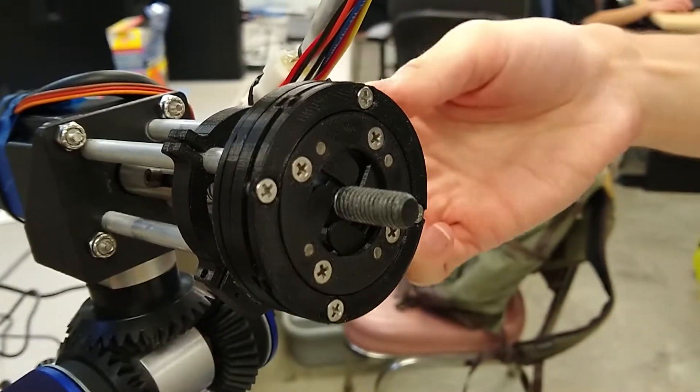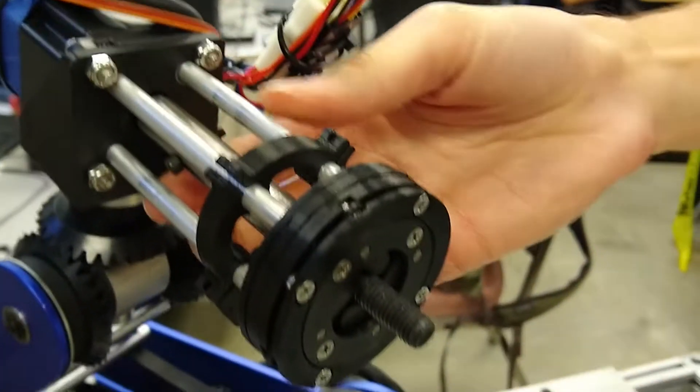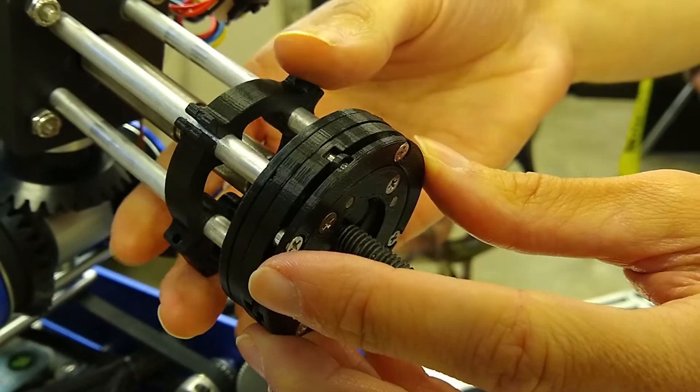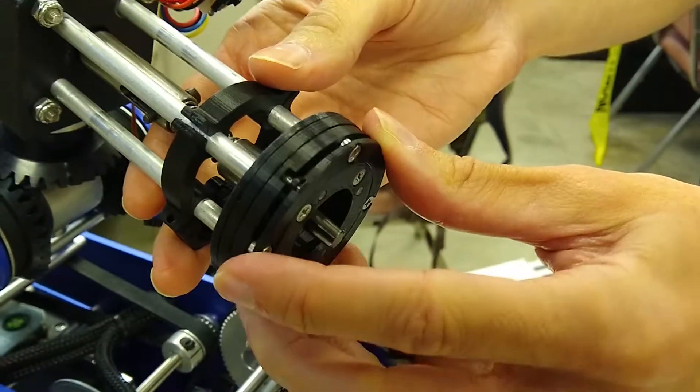...the little iris will close or open depending on whether we're trying to untighten or tighten a bolt into the bolt hole. That allows the robot to actually securely pick up and carry the bolt from one location to the next.